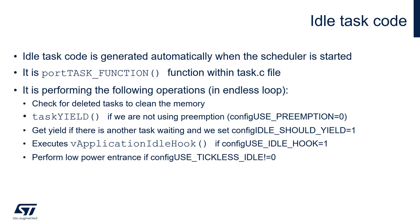The second role of the idle task is execution of the taskYield function, if we are not using preemption. taskYield means we are immediately exiting the idle task code and giving the chance for other tasks to be executed. If there is another task waiting, the idle task immediately exits the running state and goes to the ready state. If it is the only one executing and we have enabled the idle hook by setting configUSE_IDLE_HOOK to one, there will be application idle hook code execution. This code can be used for debug purposes, such as checking how much time is spent within the idle task during the development phase.